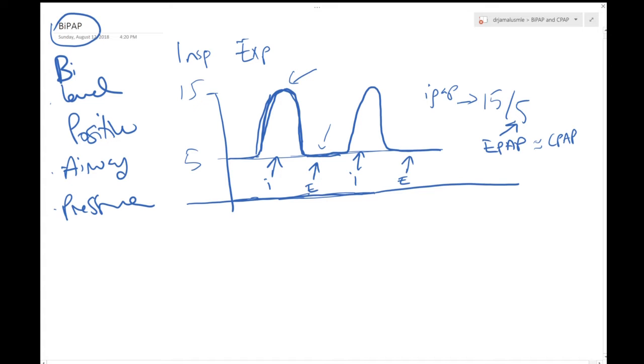So what does IPAP do and what does EPAP do? Let me start with the easier one, which is the EPAP. EPAP improves oxygenation and it prevents alveolar collapse. EPAP makes sure that your alveoli are still open even though you're in expiration, because that makes taking the next breath a lot easier.